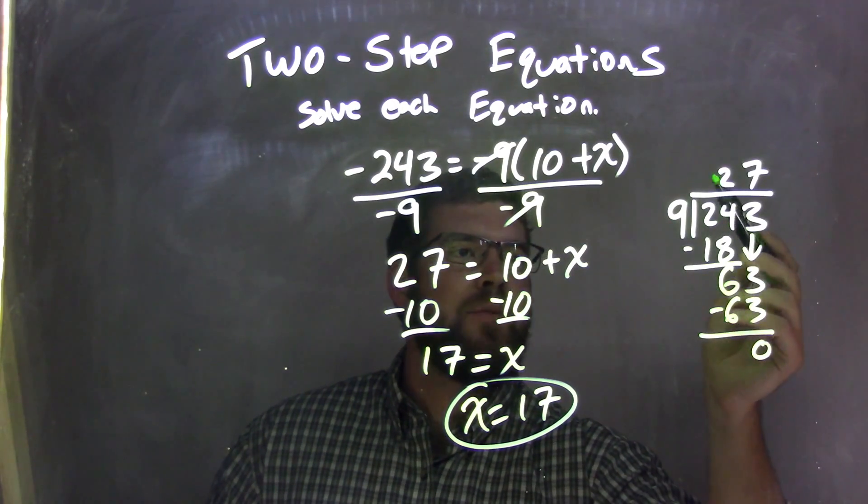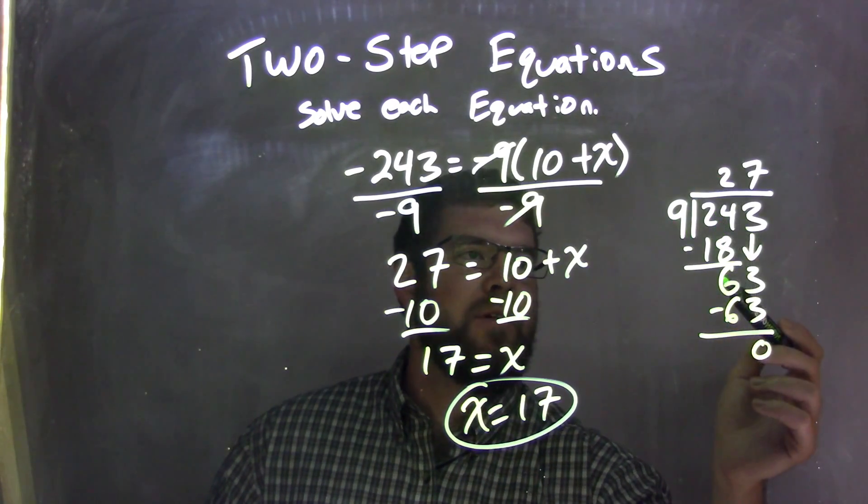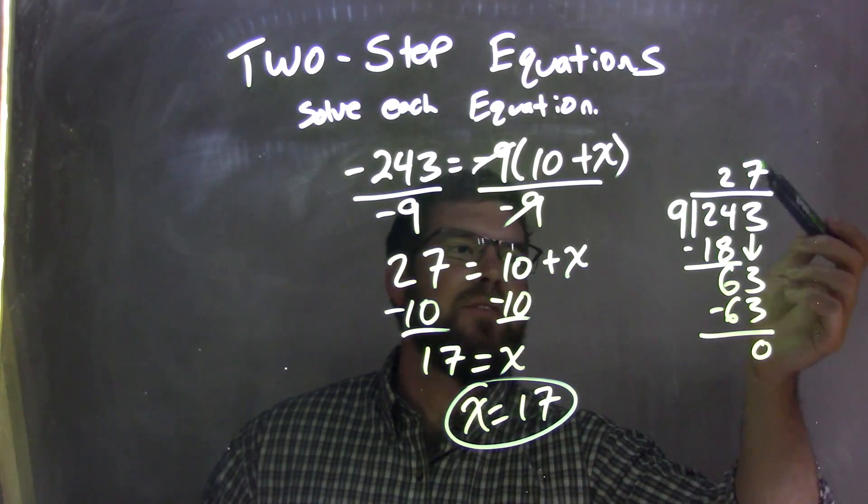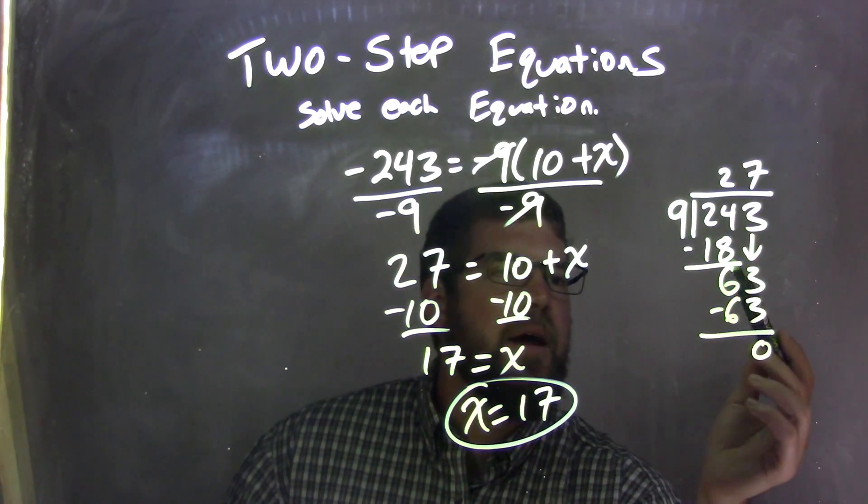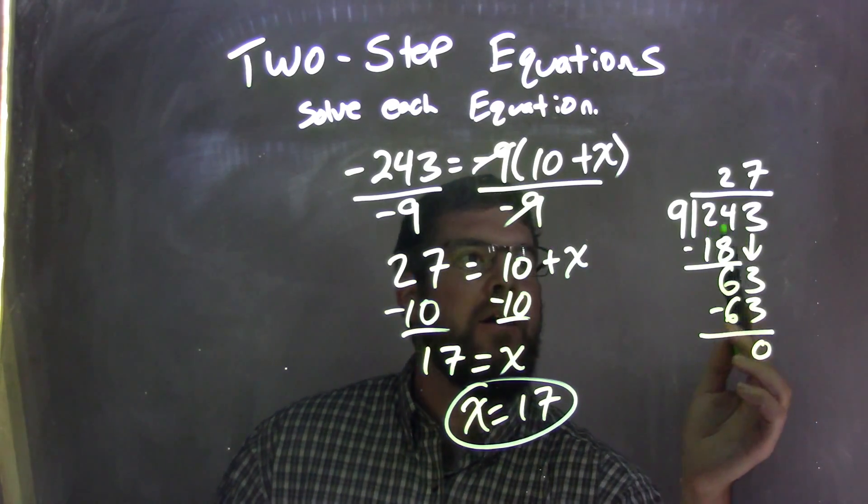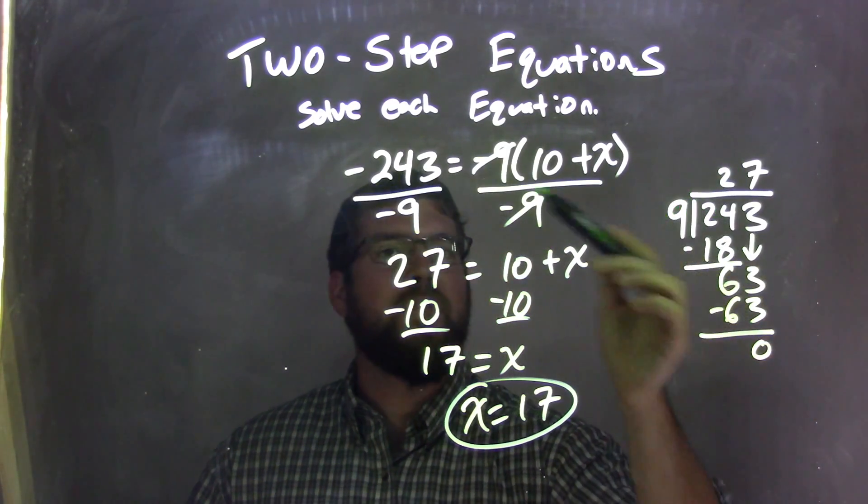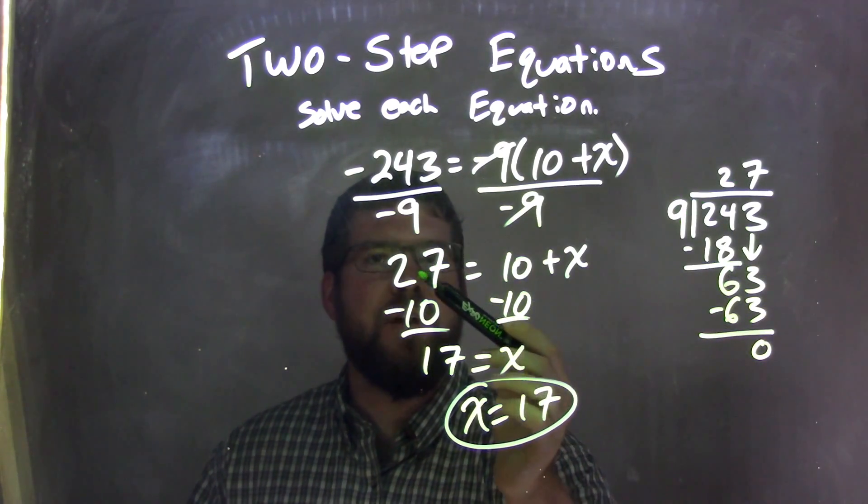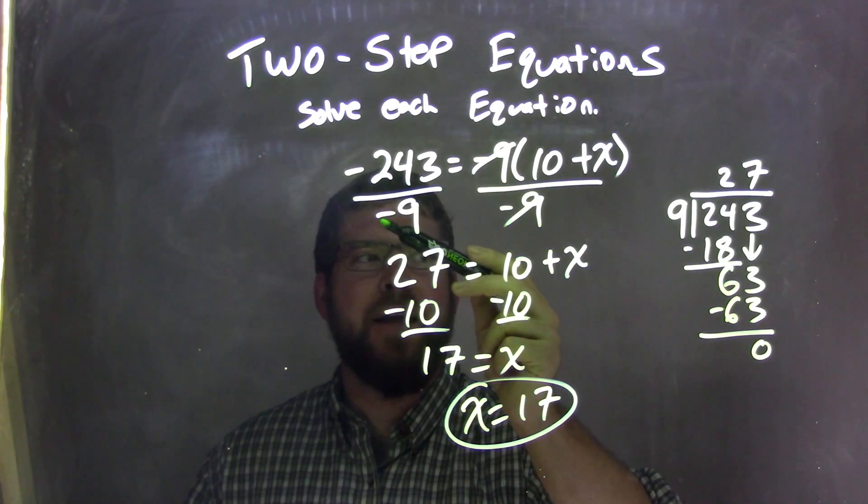9 goes into 24 two times. 2 times 9 is 18. Subtract and get a 6. Bring down the 3 there, right? 9 goes into 63 seven times. 7 times 9 is 63. And 63 minus 63 is 0, giving me a division here of 243 divided by 9 being 27. Positive 27. Again, remember, negative divided by negative is a positive.